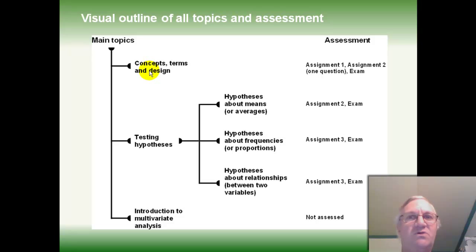We'll look at the first one briefly in this lecture in a moment. The second main area is testing hypotheses. That's topics four and five, which are testing hypotheses about means or averages. Topic six, which is testing hypotheses about frequencies or proportions. And topic seven, which is testing hypotheses about relationships between two variables. The last area is an introduction to multivariate analysis. And this is topic eight, the last topic in the unit.